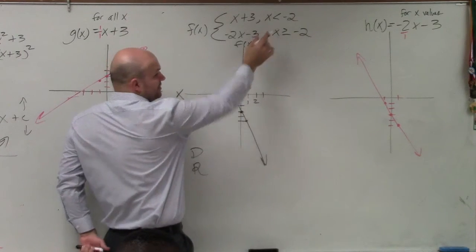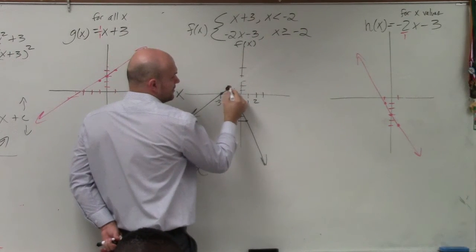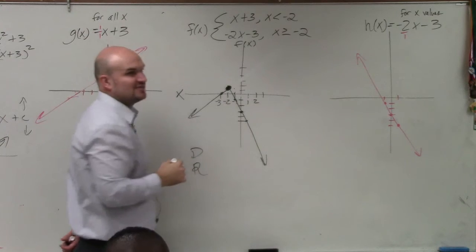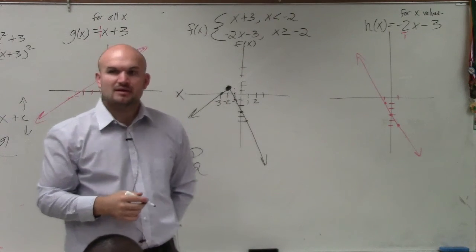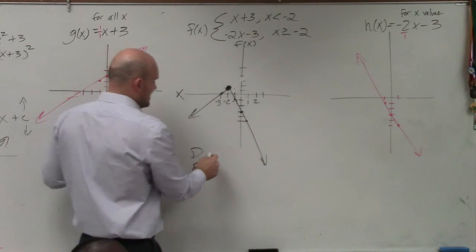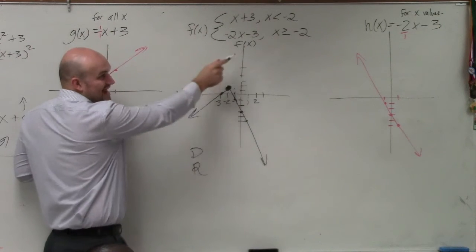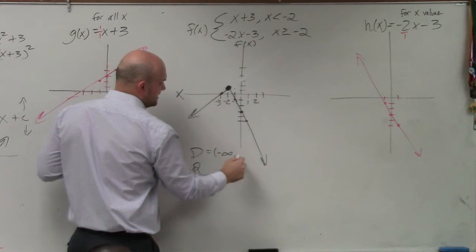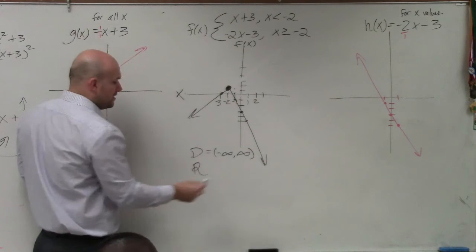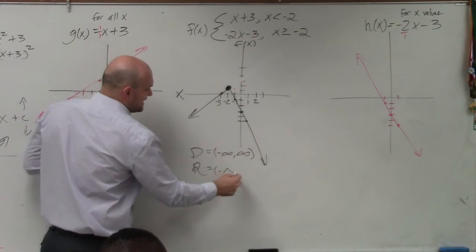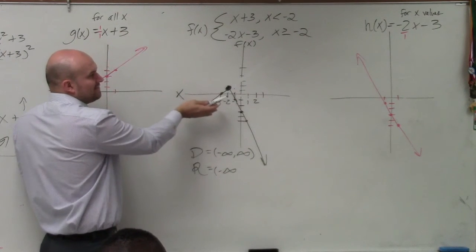And it's greater than or equal to, so it's a filled-in dot. So, if I say my domain, that dot filled it in, so my domain is from negative infinity to infinity. Whereas my range is negative infinity to how high did this graph go up?